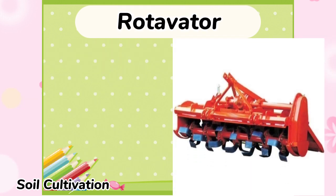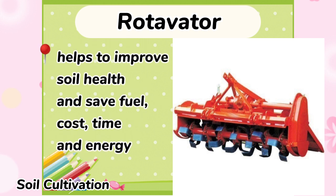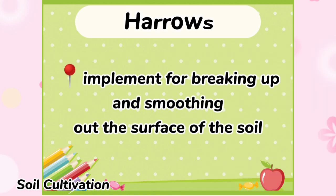Rotabator is a tractor-drawn implement which is mainly used for seedbed preparation within one or two passes and is suitable in removing and mixing residuals of maize with sugarcane, etc. Thereby it helps to improve soil health and save fuel, cost, time, and energy as well.